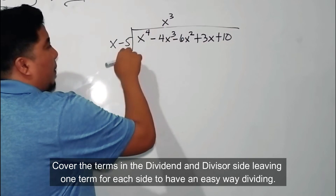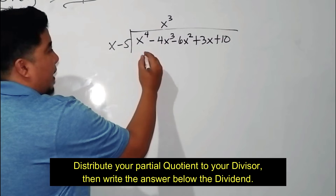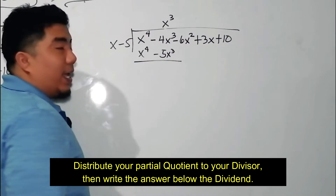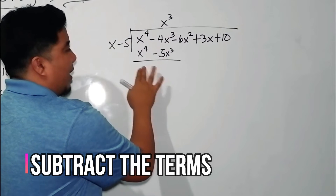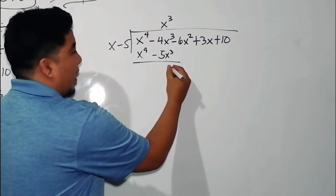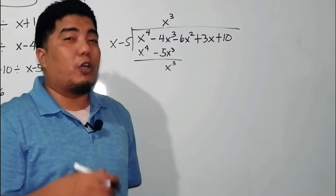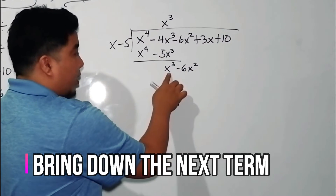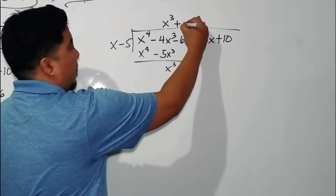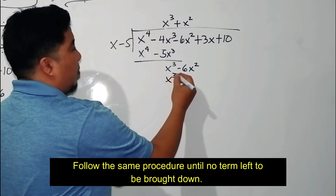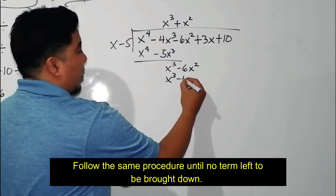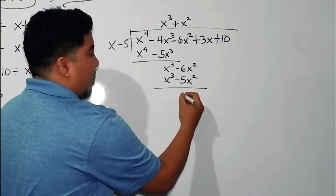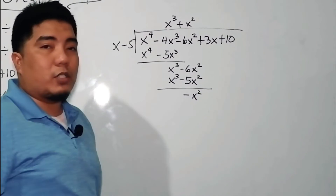x cubed will be multiplied by the two terms of the divisor: x cubed times x is x to the fourth; x cubed times negative 5 is negative 5x cubed. Subtract: x to the fourth minus x to the fourth is 0. Negative 4 minus negative 5 is positive 1, so we have x cubed. Bring down negative 6x squared. x cubed divided by x is positive x squared. x squared times x is x cubed; x squared times negative 5 is negative 5x squared. Subtract: the answer is 0, and negative 6 minus negative 5 is negative 1, giving negative x squared.